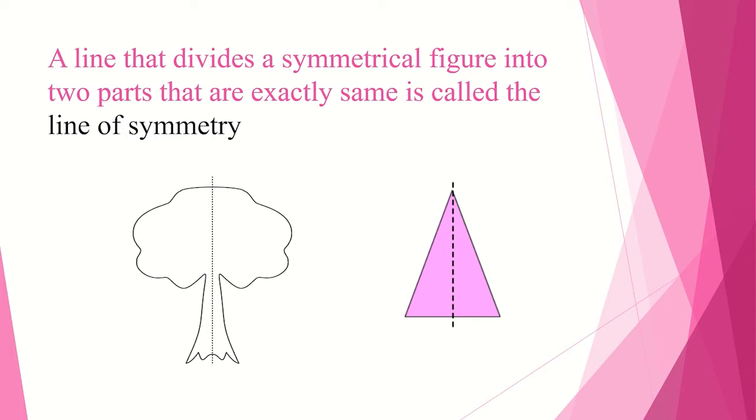And here we have the line of symmetry for tree and triangle. When you divide it and all the parts are exactly the same, we call it a line of symmetry.